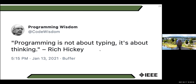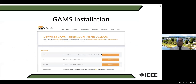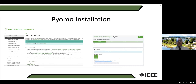GAMS installation is straightforward — download the latest version for your platform (Linux, Mac, or Windows) and install the license. For PyOMO, you install Anaconda, which contains many packages including PyOMO, and use it directly inside Anaconda.